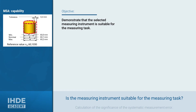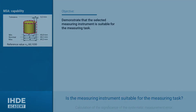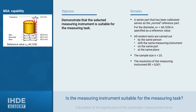The task is to prove that a selected measuring instrument is suitable for the measuring task. The product characteristic to be measured is the diameter of a piston, with a nominal size of 60.1 mm. A serial part that has been calibrated serves as a reference part. For the diameter, a reference value of XM = 60.1030 mm is given. All random tests were carried out by the same person with the same measuring instrument on the same part at the same place.